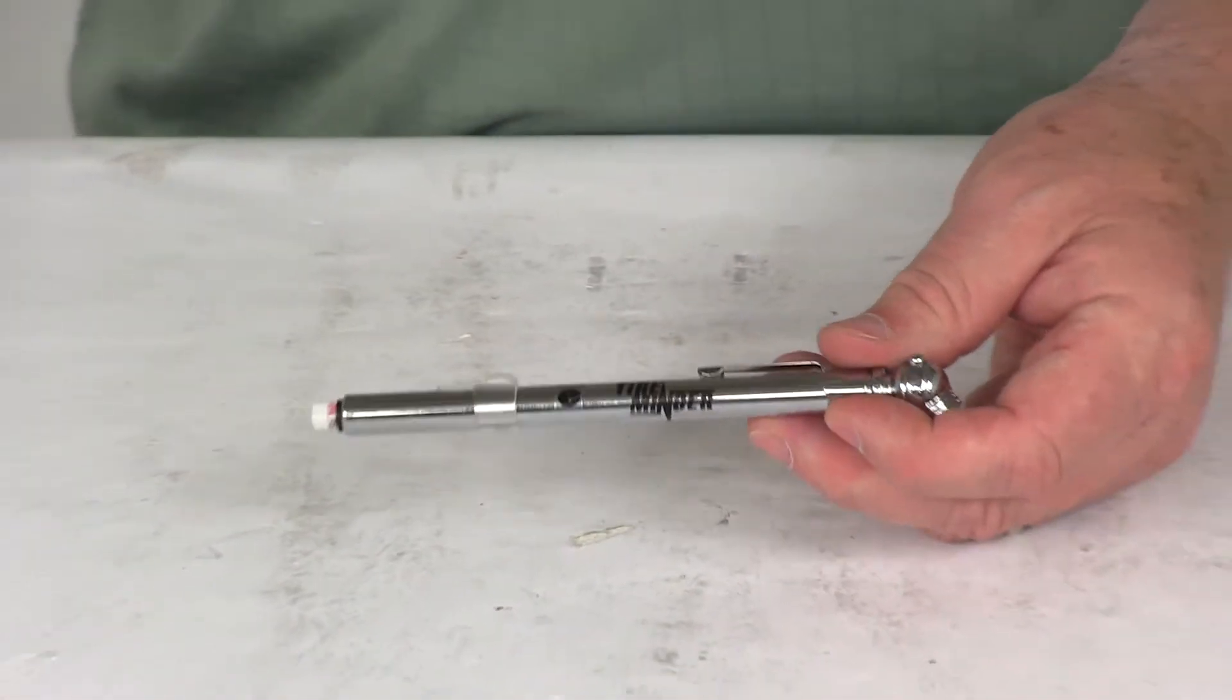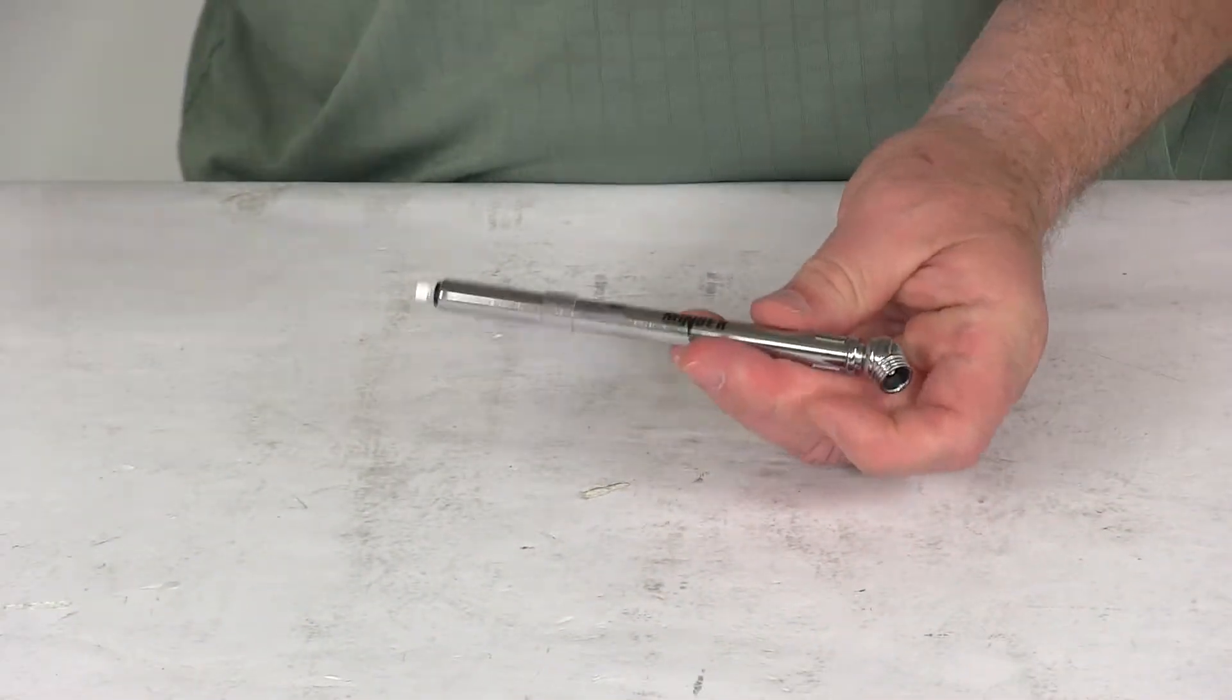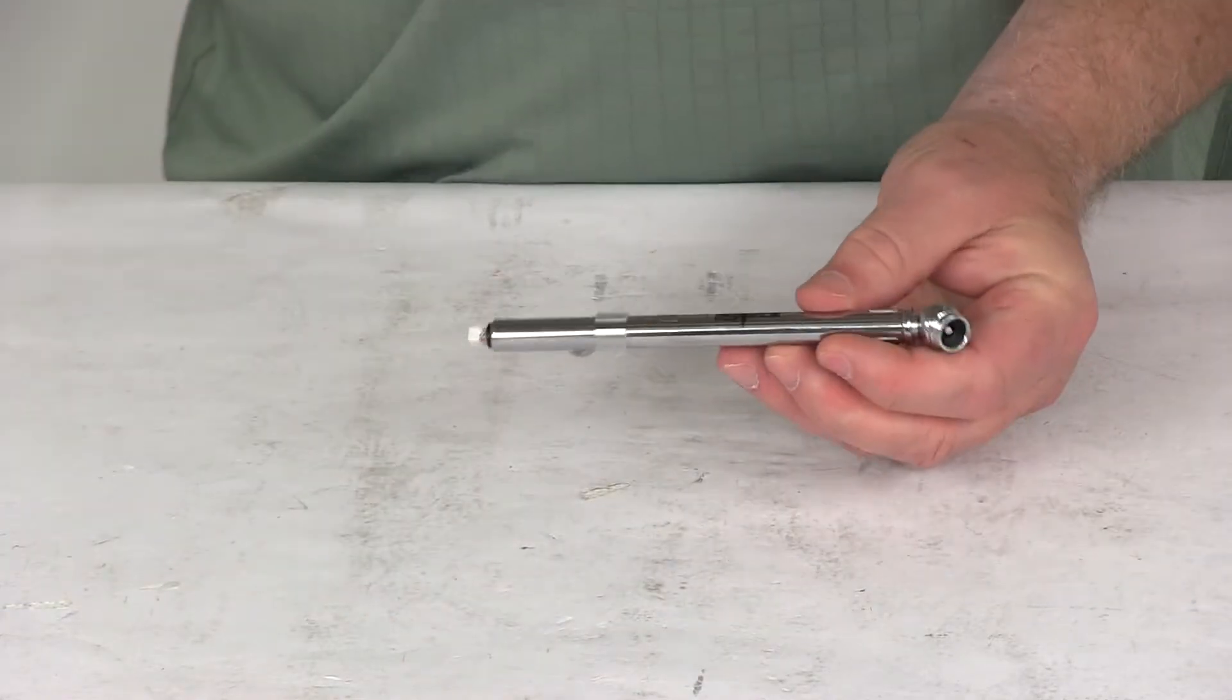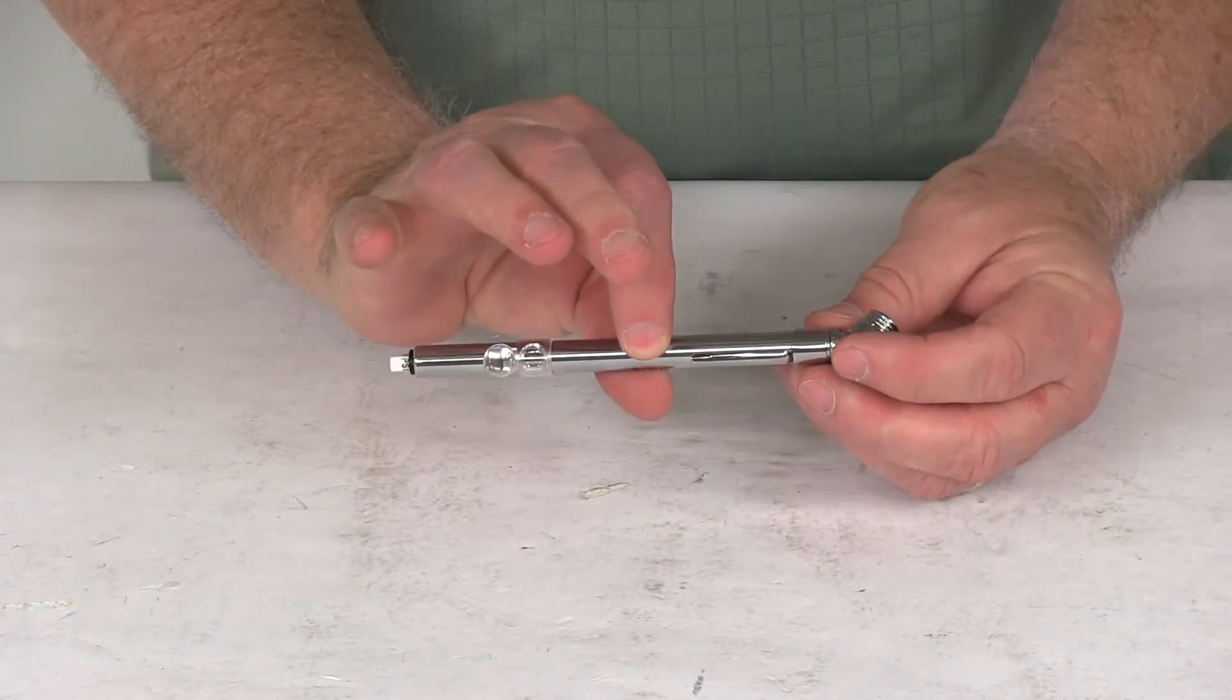Let me give you a few measurements on this. Overall length is going to be right at about 6 inches, and its round diameter is about 3/8ths of an inch.